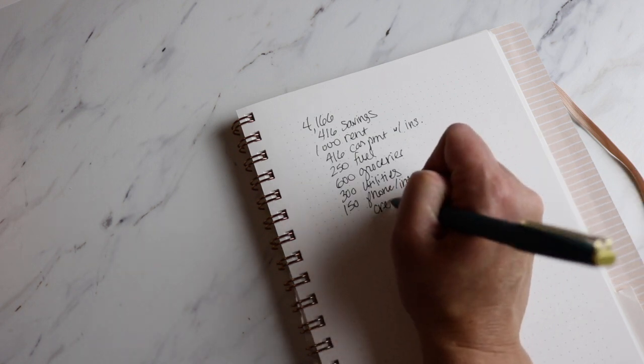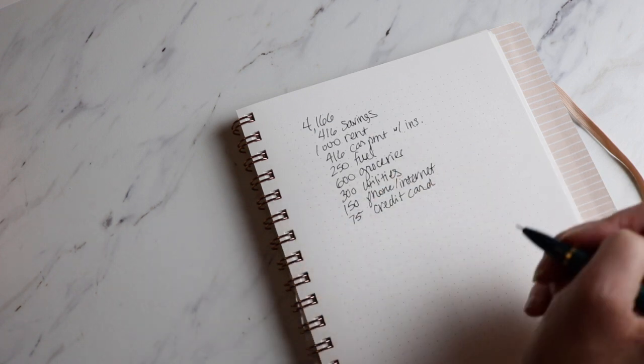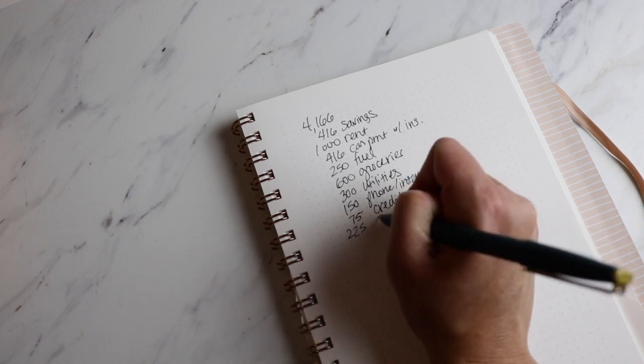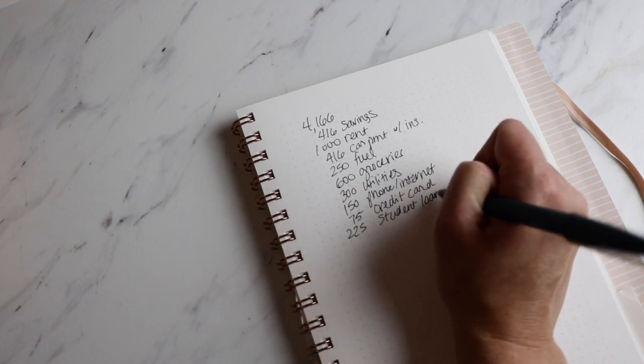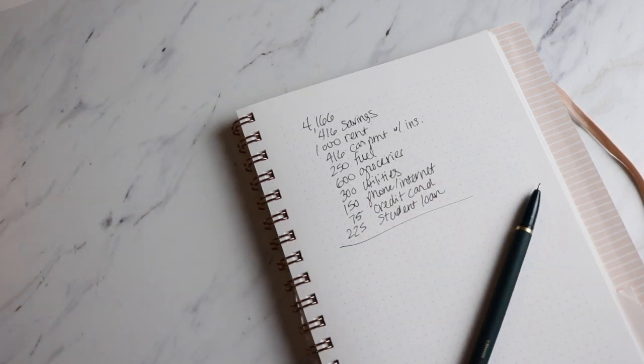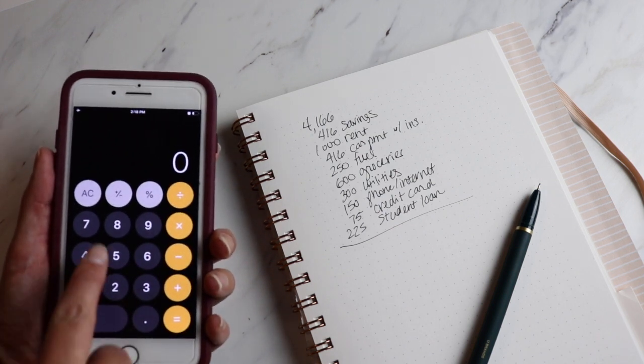Now, in this scenario, this person has a credit card with a minimum payment of $75 per month and a student loan payment of $225. So we're going to take all of those expenses and that is not counting sinking funds or any money going towards goals, no cash envelopes. We're going to take this and calculate it out.